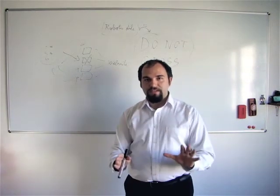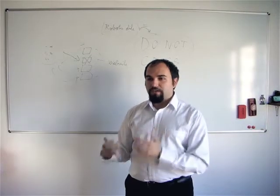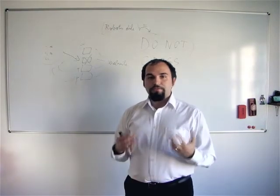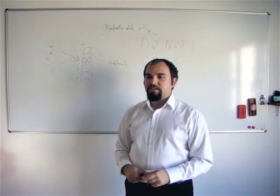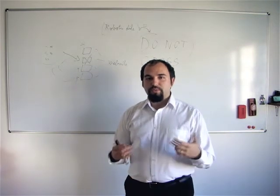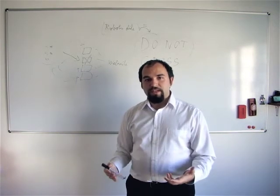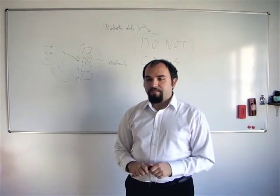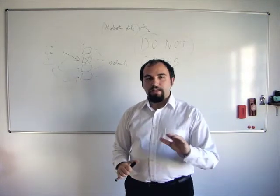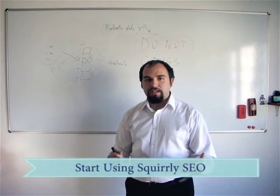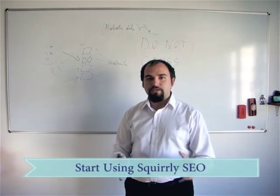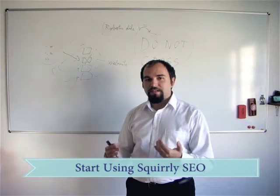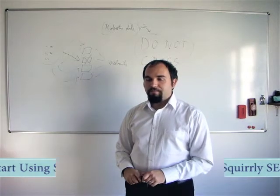Now, how can you fix this? How can you make sure that you have a robots.txt file in your website? Well, if you're using WordPress, you can simply search for a WordPress SEO plugin that already comes with a robots.txt file installed in it. For example, the Squirly SEO plugin already has it — you don't have to do anything about it. It will just post a robots.txt file in your website.